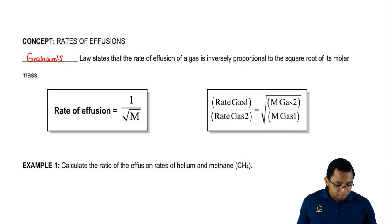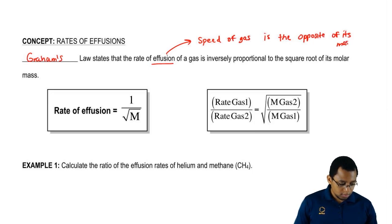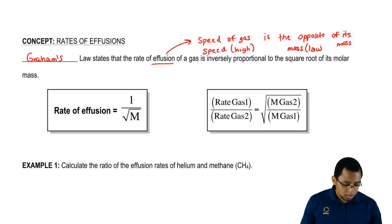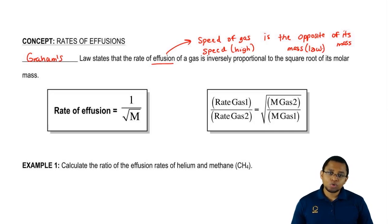What this is really saying is that the speed or rate at which a gas moves, so effusion is just seen as speed. The speed of a gas is the opposite of its weight. What that means is if my speed is high, it's because the mass of my gas is low. Basically, the less you weigh as a gas, the faster you move. That's what effusion is trying to explain.